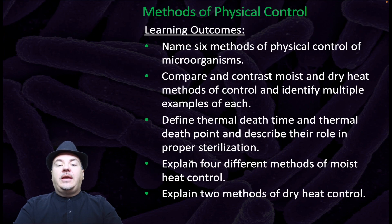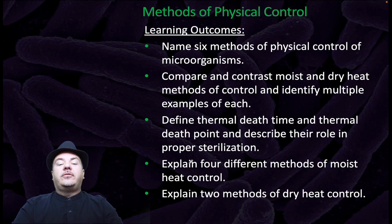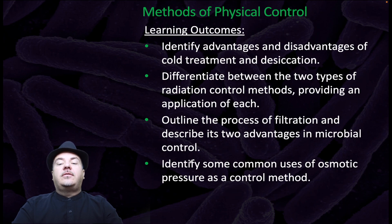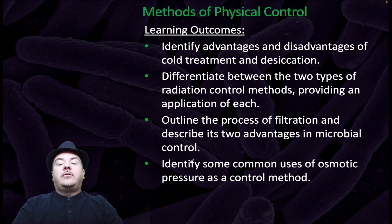By the end of this video, you should be able to name six methods of physical control of microorganisms, compare and contrast moist and dry heat methods and identify multiple examples of each, define thermal death time and thermal death point and describe their role in proper sterilization, explain four different methods of moist heat control and two methods of dry heat control. You should also be able to identify advantages and disadvantages of cold treatment and desiccation, differentiate between the two types of radiation control methods providing an application of each, outline the process of filtration and describe its two advantages in microbial control, and identify some common uses of osmotic pressure as a control method.